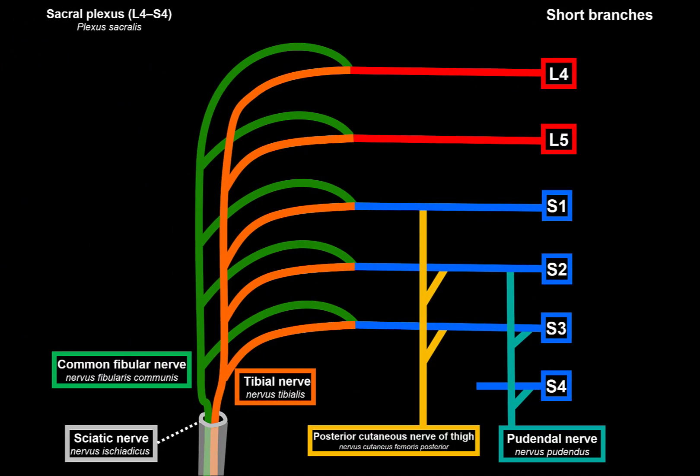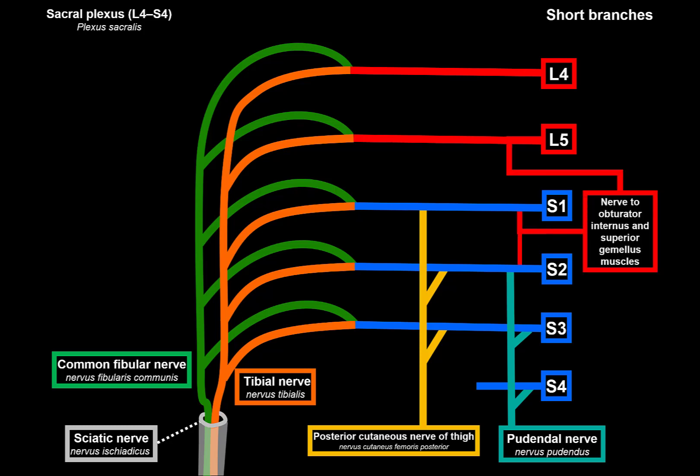Other short branches are muscular nerves. Nerves from L5, S1, and S2 supply the obturator internus and superior gemellus — providing lateral rotation of the hip. Another nerve from S1 and S2 supplies the piriformis muscle, which also provides external rotation at the hip joint.